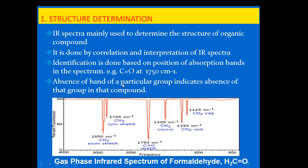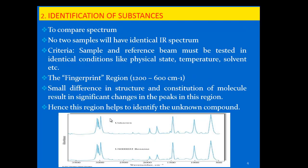The absence of a band for a particular group indicates the absence of that compound in a mixture. For example, in the spectrum of formaldehyde, the carbonyl group absorbs at 1750 per centimeter, CH₂ asymmetric stretch at 2850, CH₂ symmetric stretch at 2785 per centimeter, and scissoring, rocking, and wagging vibrations at 1485, 1250, and 1165 per centimeter. This is the complete spectrum of formaldehyde.